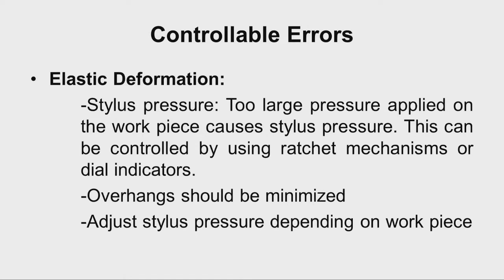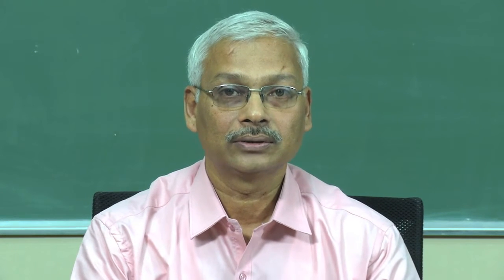We will now discuss elastic deformation. During measurement, sometimes the operator will apply more pressure on the moving element, so that the stylus or the moving jaw will compress the workpiece. Due to this, the workpiece gets damaged and also the measuring instrument jaw and anvil gets damaged, leading to errors in the measurement. How can this be eliminated?